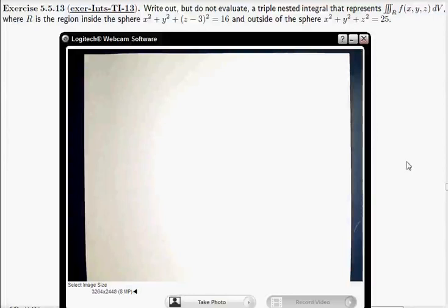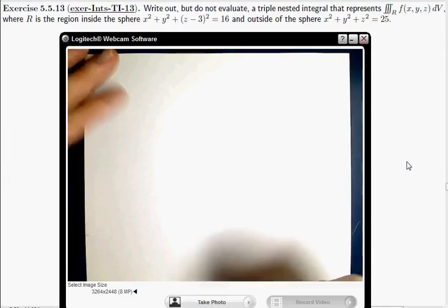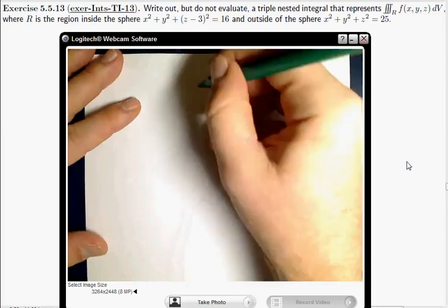Okay, the picture here is going to be, we're going to have to do a lot of thinking about this picture. So, clearly we've got two spheres. One of them is a sphere of radius 4, centered at 3 on the z-axis. The other one is a sphere of radius 5, centered at the origin. So, I'm going to try to draw a picture here, but this is going to be kind of bad, really.